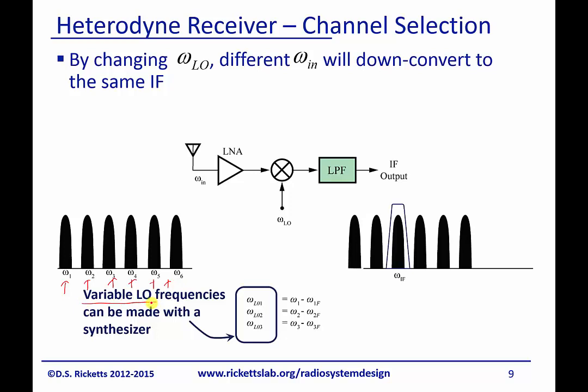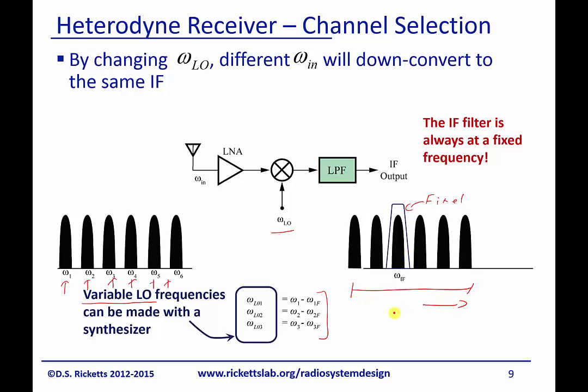We have a fixed filter, and by changing the LO we can move the spectrum right or left to put the channel we want into the filter. So if I want channel 4, I would move the LO so that channel 4 falls in the passband. This is a nice way to have a high-quality fixed-frequency filter and use the LO to select which channel to listen to.